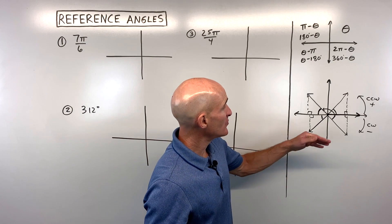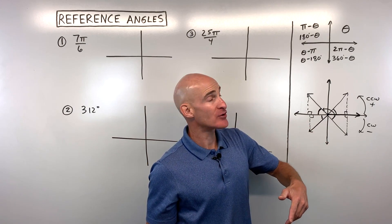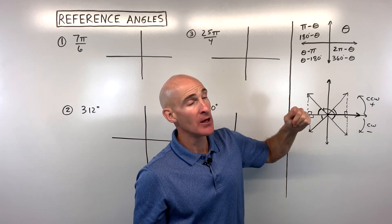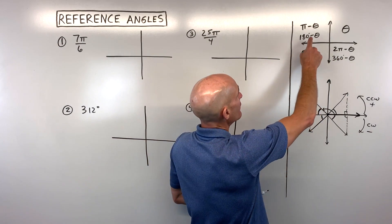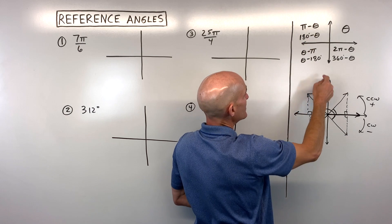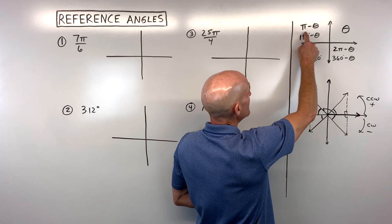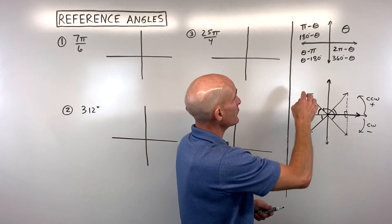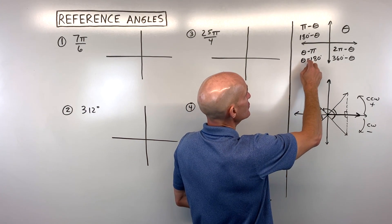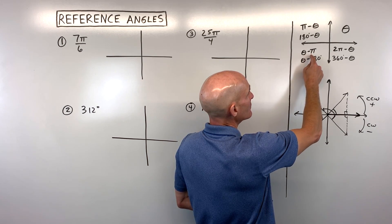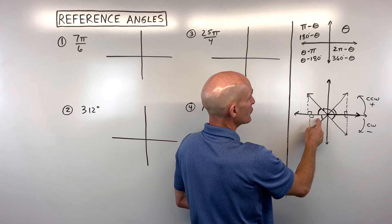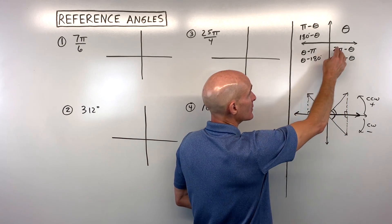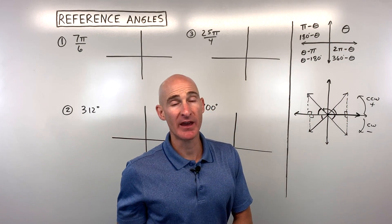That reference angle is always going to be between 0 and 90, or 0 and pi over 2 if you're in radians. Some students like to have a formula: if you're in the second quadrant, take pi minus theta — that gives the reference angle. In the third quadrant, take theta minus pi. In the fourth quadrant, do 2 pi minus theta. And if you're in the first quadrant, it's just theta.